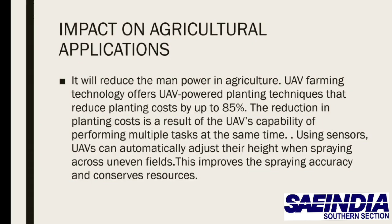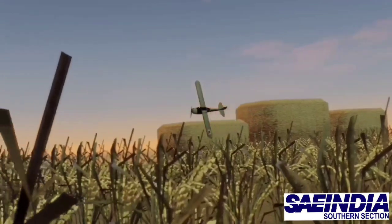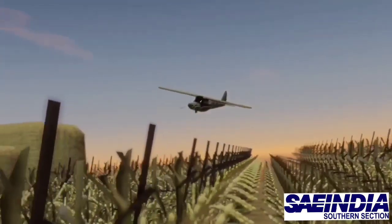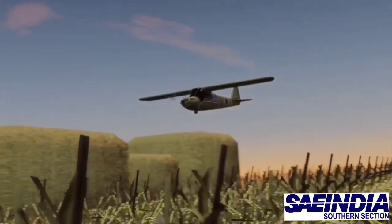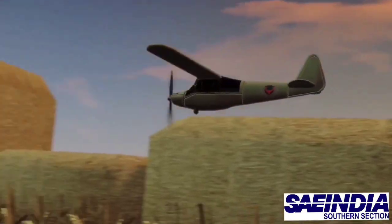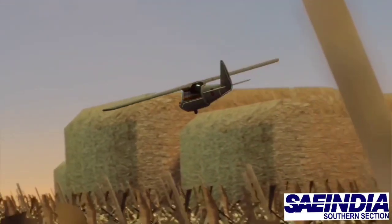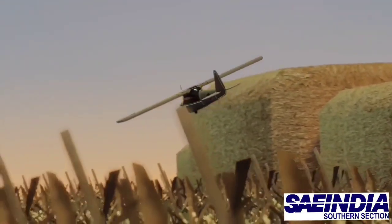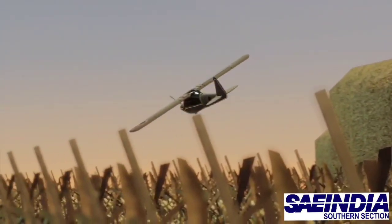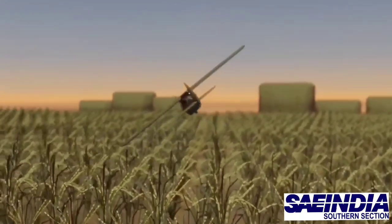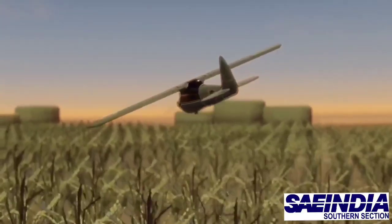This improves spraying accuracy and conserves resources. UAVs equipped with multi-spectral cameras and thermal cameras can analyze technical specifications, generating images at different altitudes with high spectral resolution required for the detection and location of weed seedlings. They can also inspect moisture levels and assess plant health.